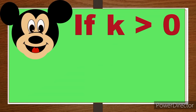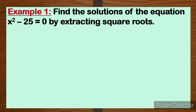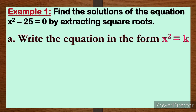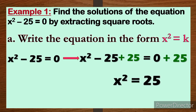I'll give you an example for each property. For the first property where k is greater than 0: Example 1 — find the solutions of the quadratic equation x² - 25 = 0 by extracting square roots. The first step is to write the equation in the form x² = k. Starting with x² - 25 = 0, we add positive 25 to both sides: negative 25 plus 25 equals 0, and 0 plus 25 is 25. Therefore, we have x² = 25.